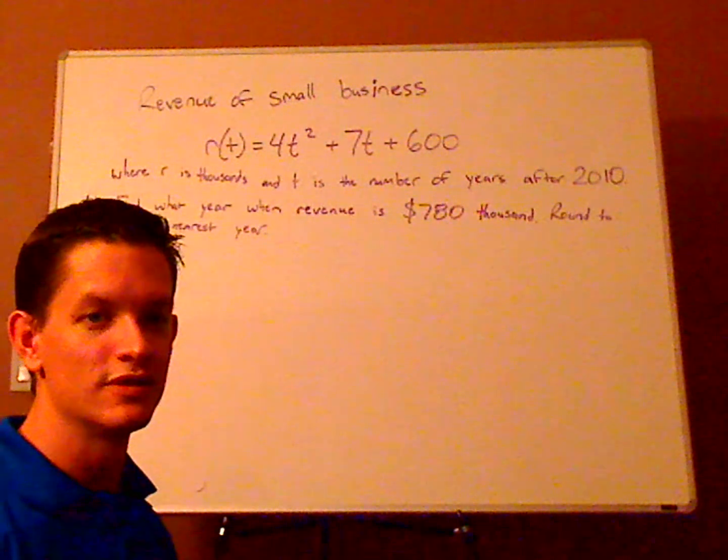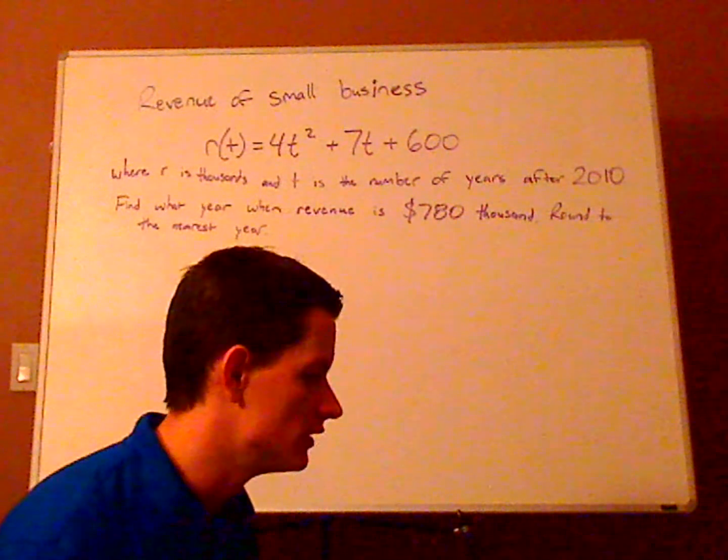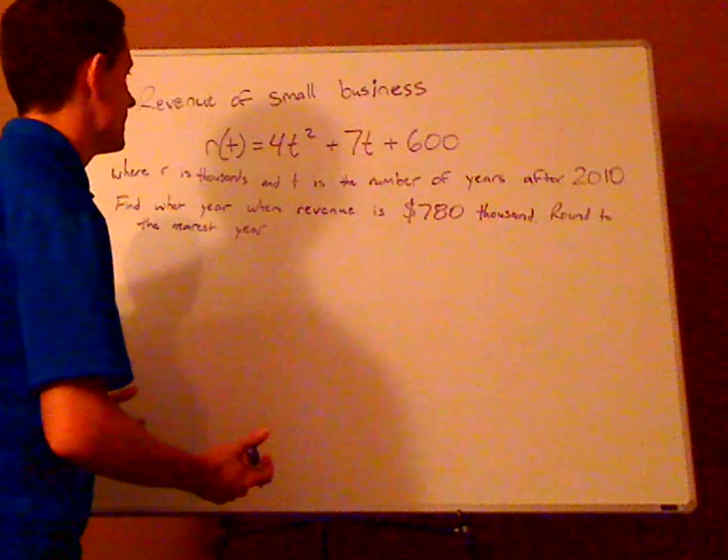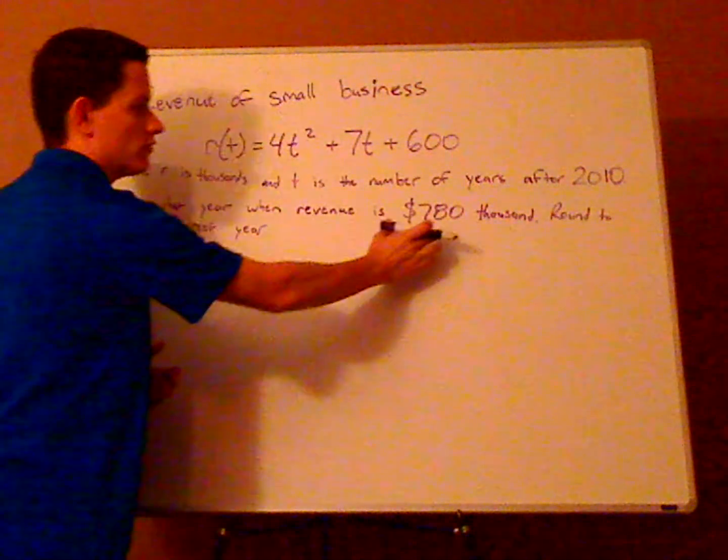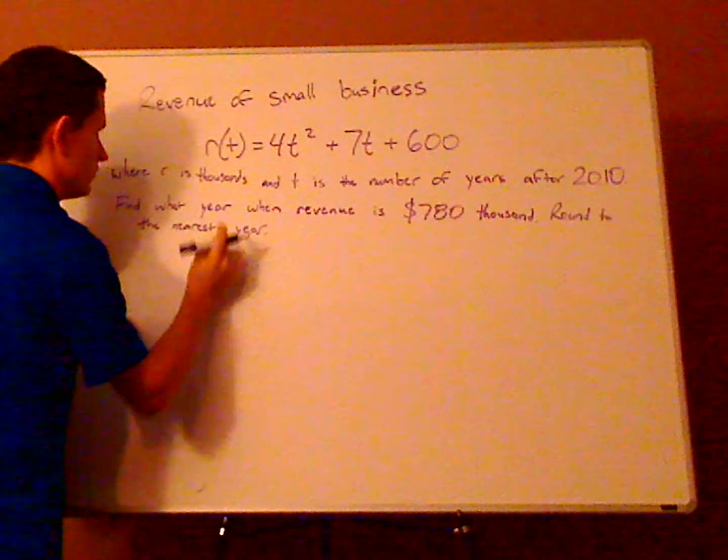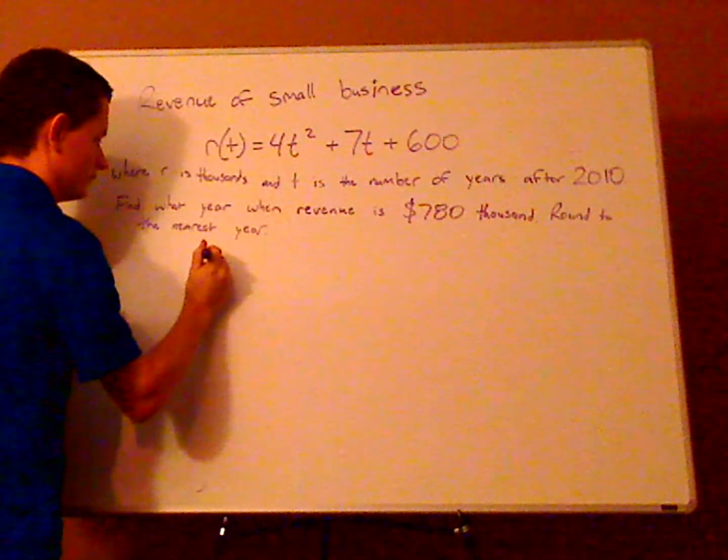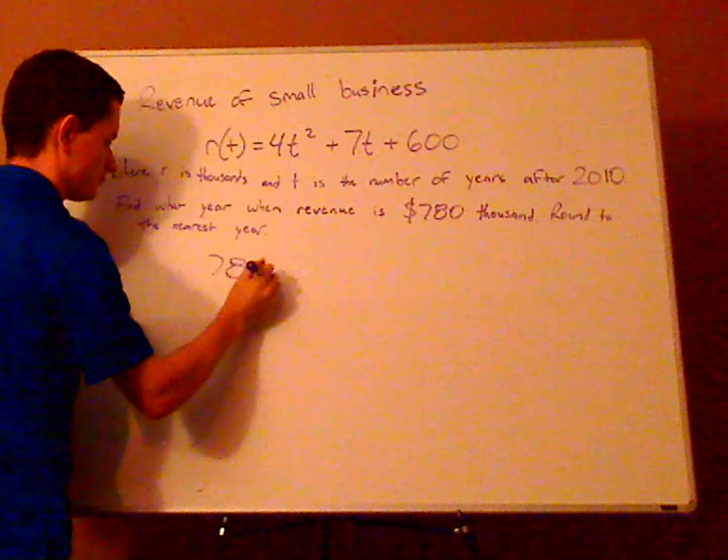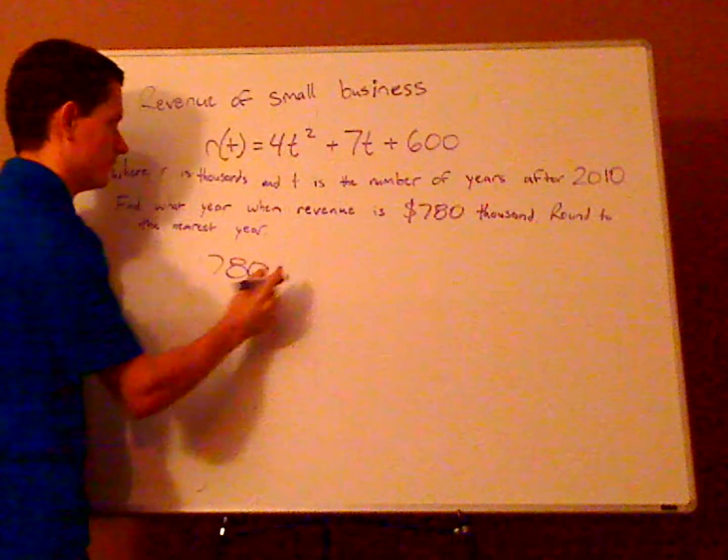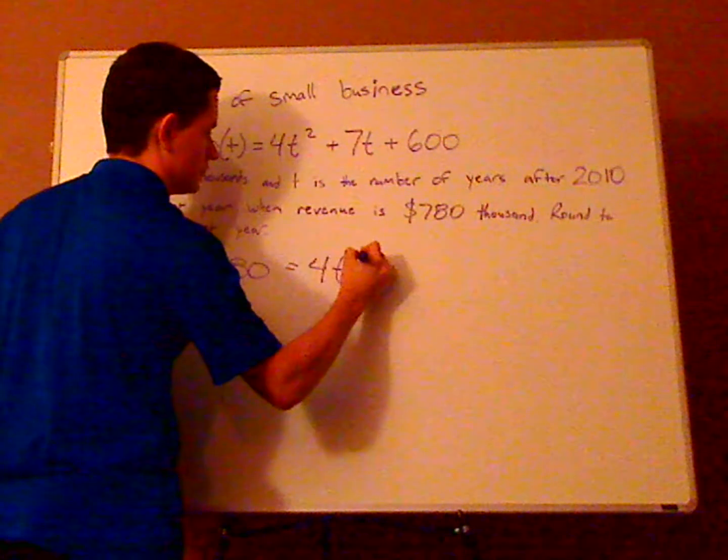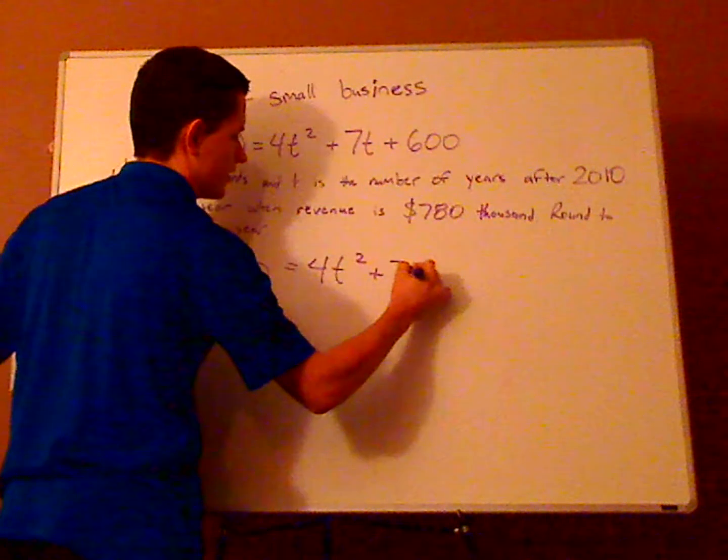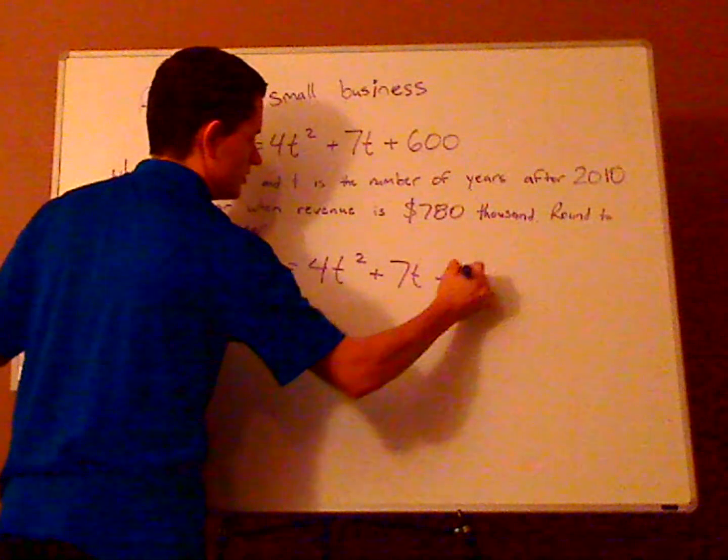Alright, you should notice that you're looking for time. Since you're looking for time, you're given the revenue. So plug in, this is your r, so replace that with 780 = 4t² + 7t + 600.